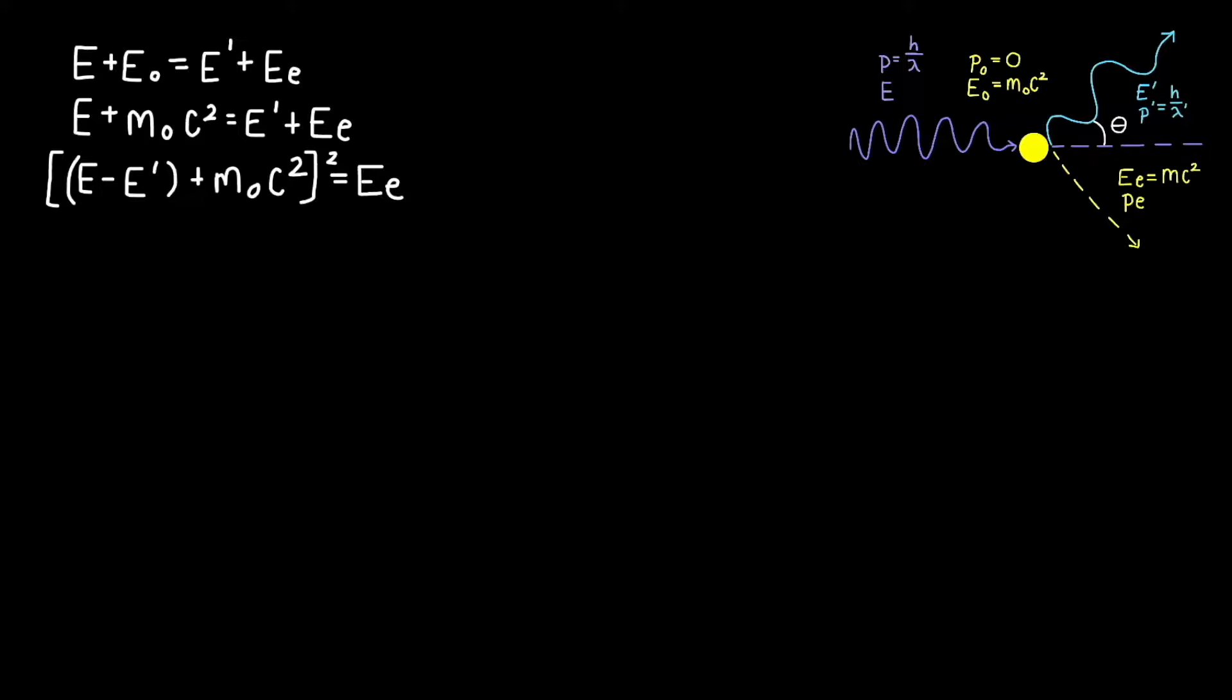Now, some of these algebraic manipulations may seem arbitrary. Remember, we are focused on rearranging our equation in such a way so that we eventually derive the Compton equation. If we divide everything by c squared, we will be able to plug in the equation p equals e over c.